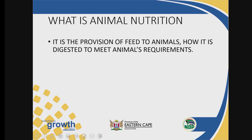What is animal nutrition? Animal nutrition is the provision of feed to animals, how it is digested and absorbed, so that these animals will be able to meet their physiological needs.